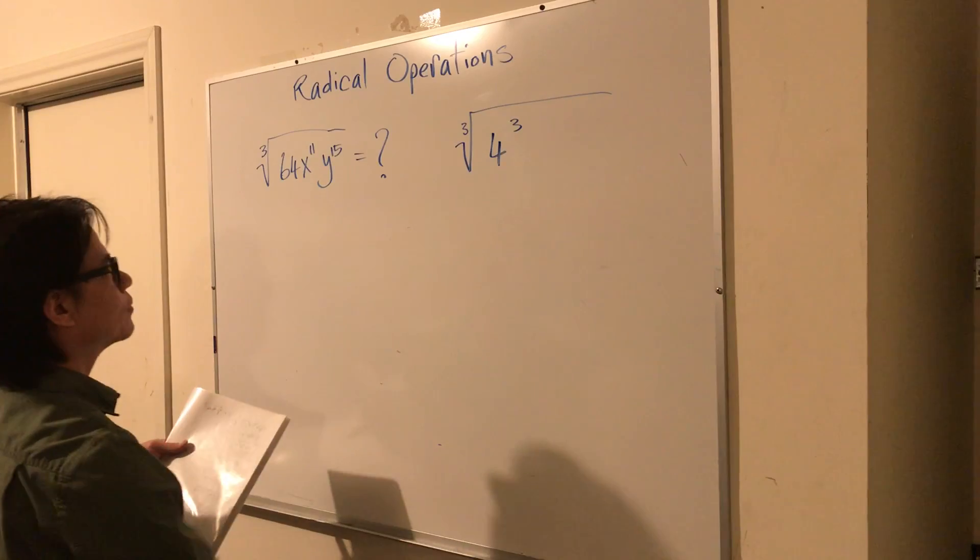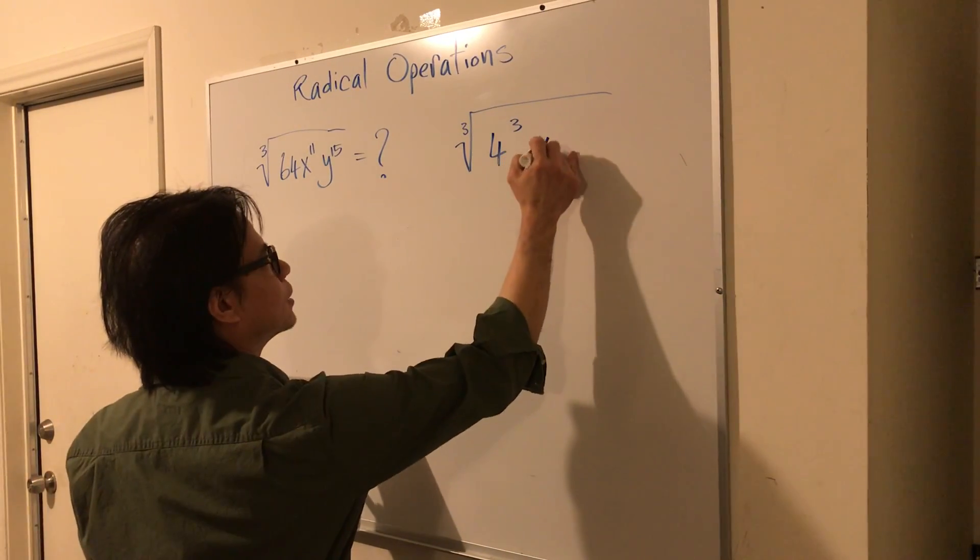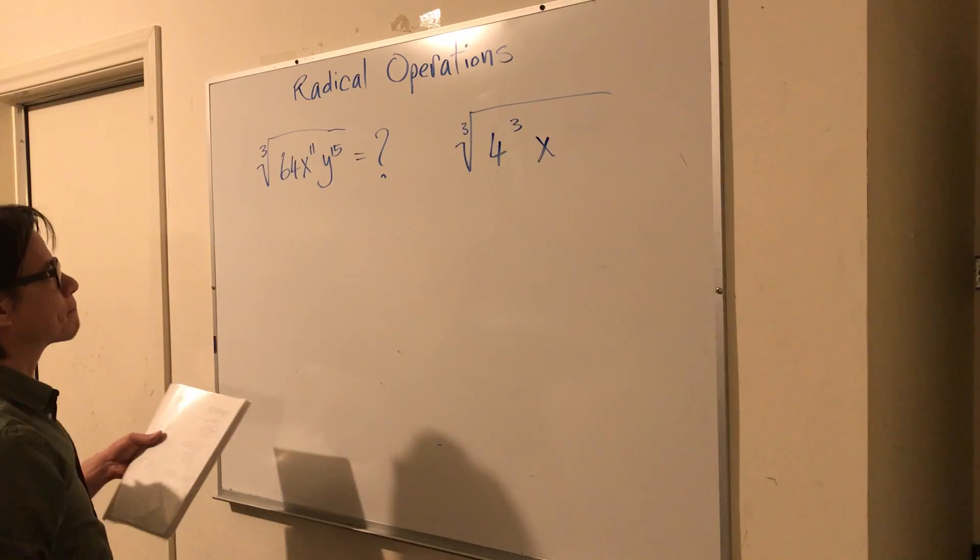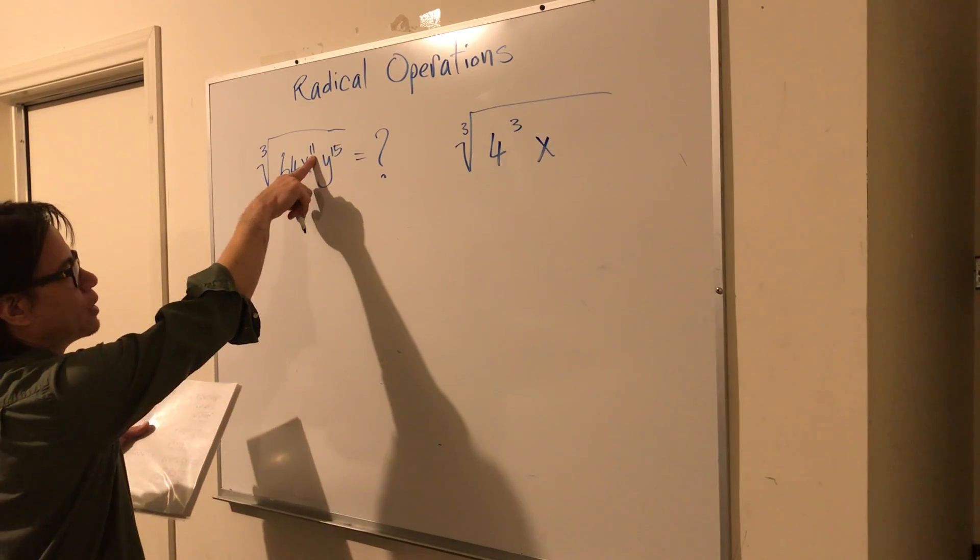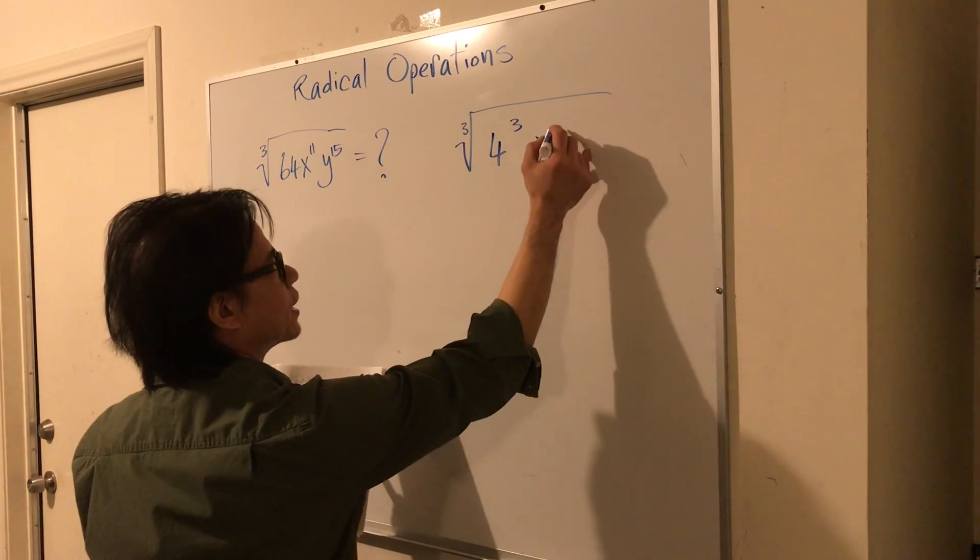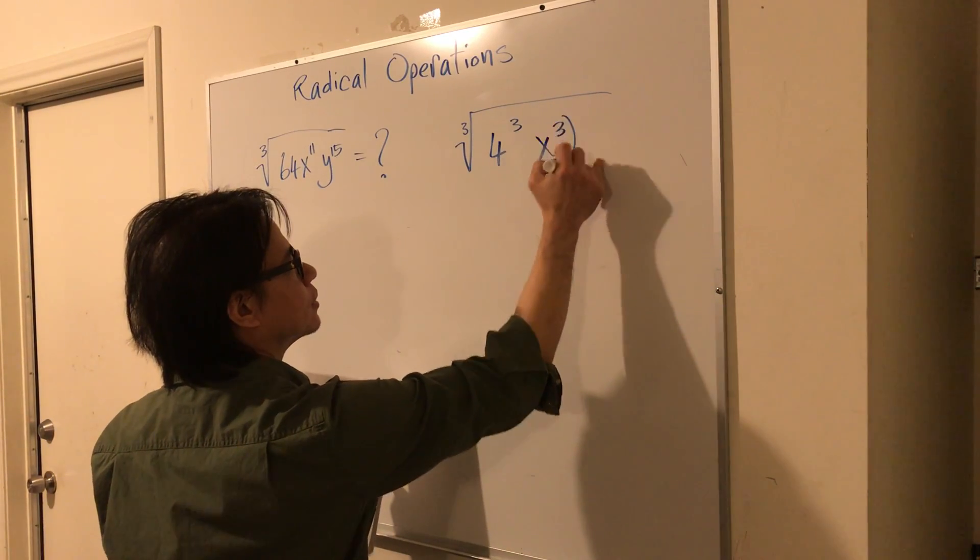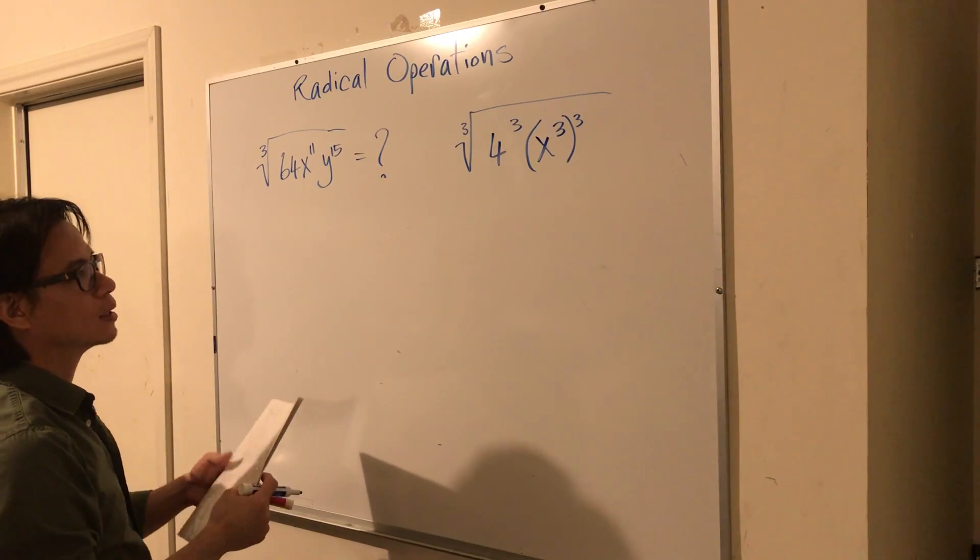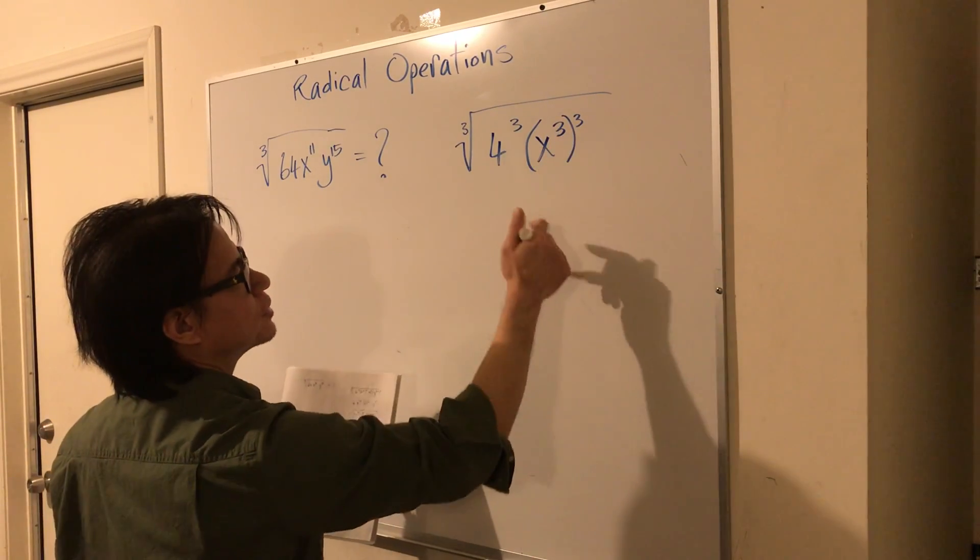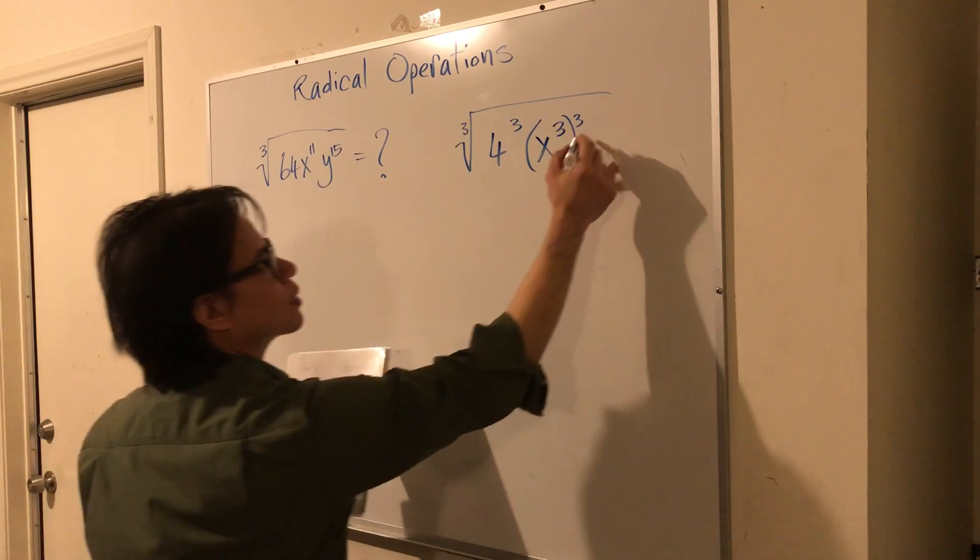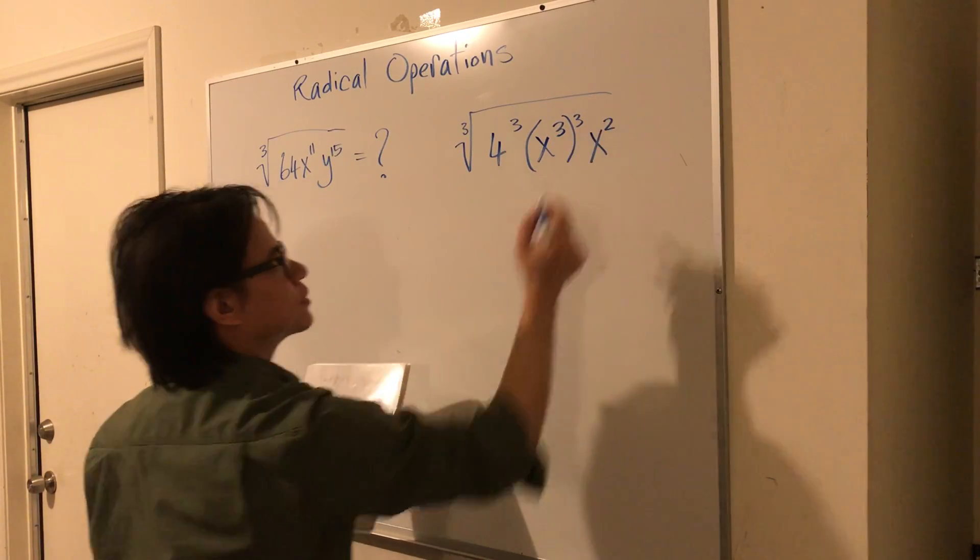Now for the x term here, we can, as I said, what can we break the 11th down into? So I'm going to say x to the third power. So 3 times 3 is 9, and we need 2 more to make 11. So we'll say x to the second.